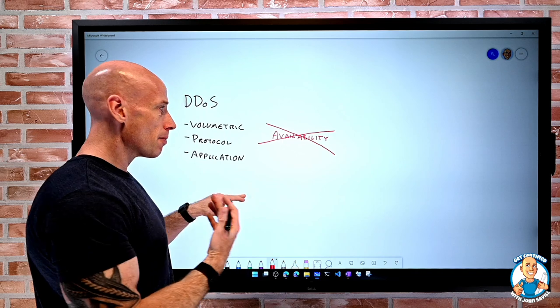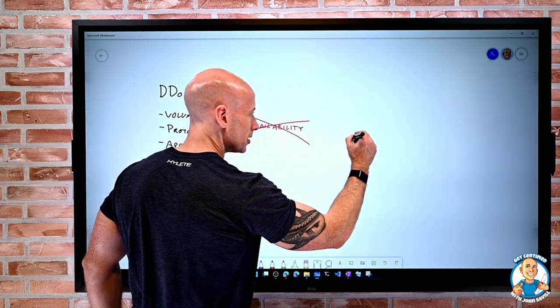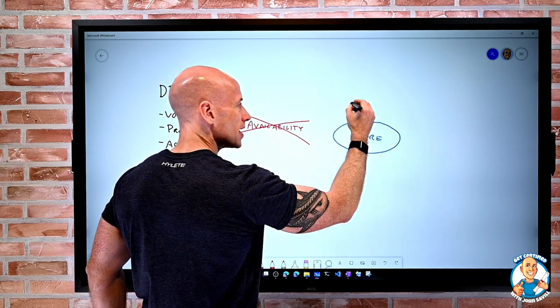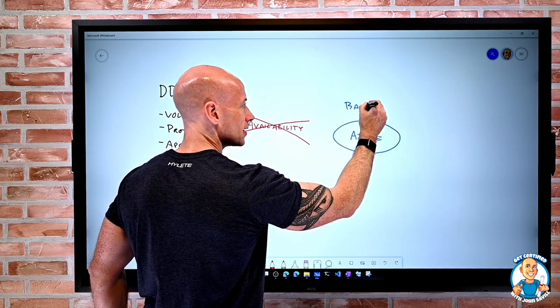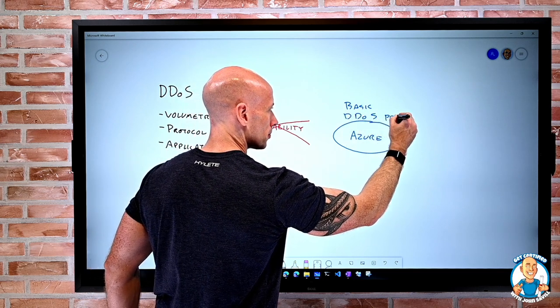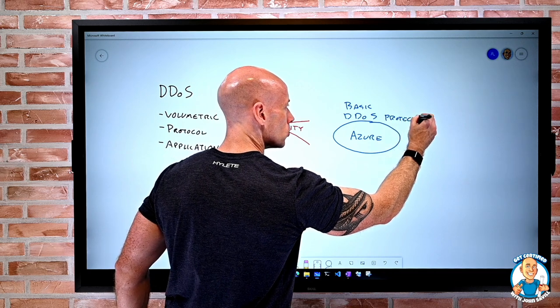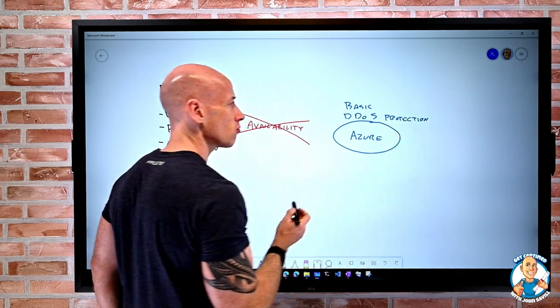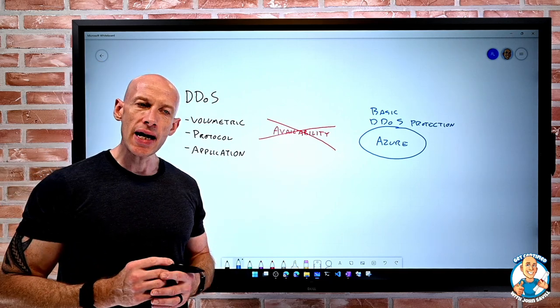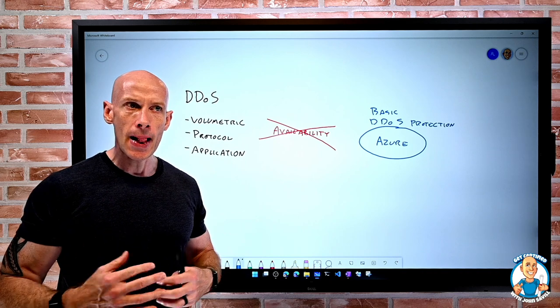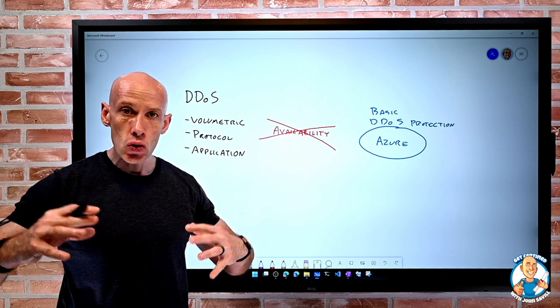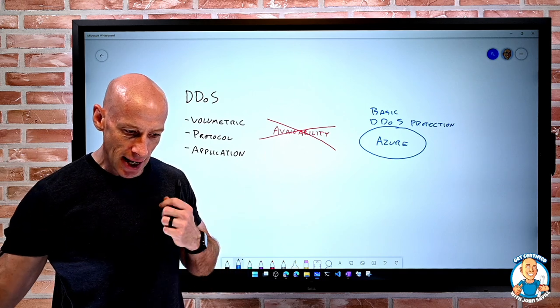Now, when I think about my resources in Azure, all of them are protected by a basic distributed denial of service protection. So no matter what the resource, this public facing resource has this protection. But the challenge of this protection is really designed to protect the Azure fabric. So it's designed to identify and protect against huge scale attacks. That's what it's focused on.